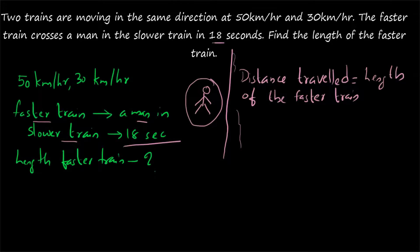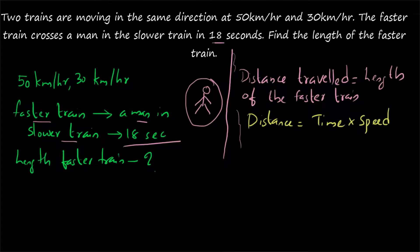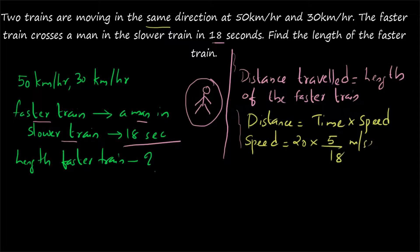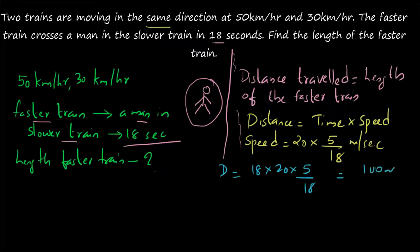Now we write down the formula: distance equals speed into time. Time is 18 seconds. For speed, we consider the relative speed since both trains are moving. They are moving in the same direction, so relative speed is the difference: 50 minus 30 equals 20 km/h, converted to metres per second as 20 × (5/18). Distance equals 18 × 20 × (5/18) which gives 100 metres. So the length of the faster train is 100 metres.